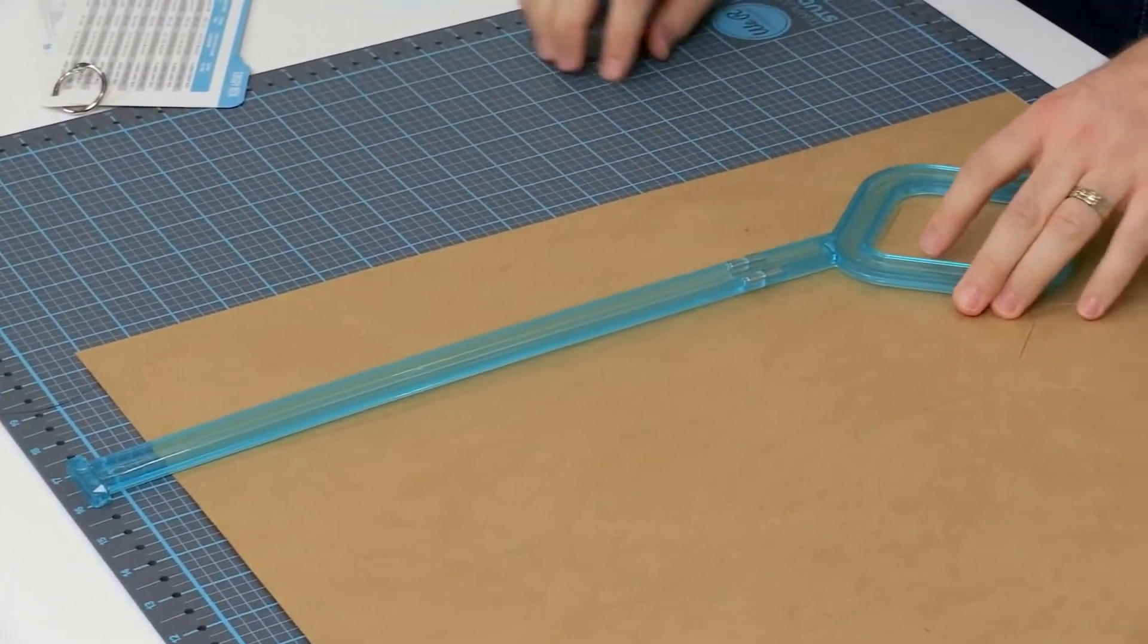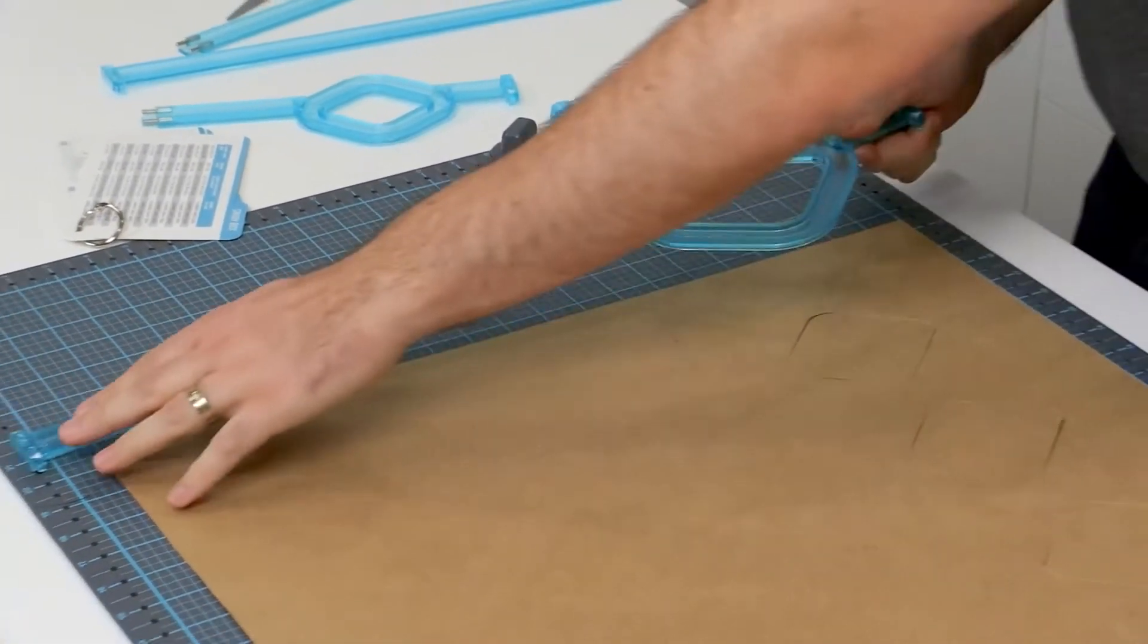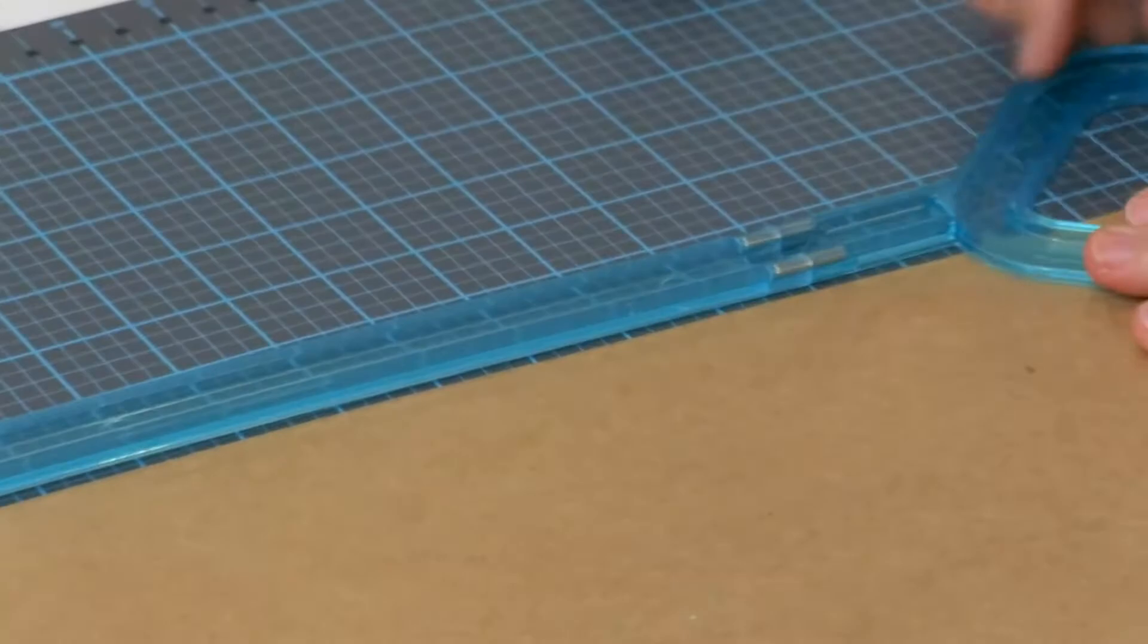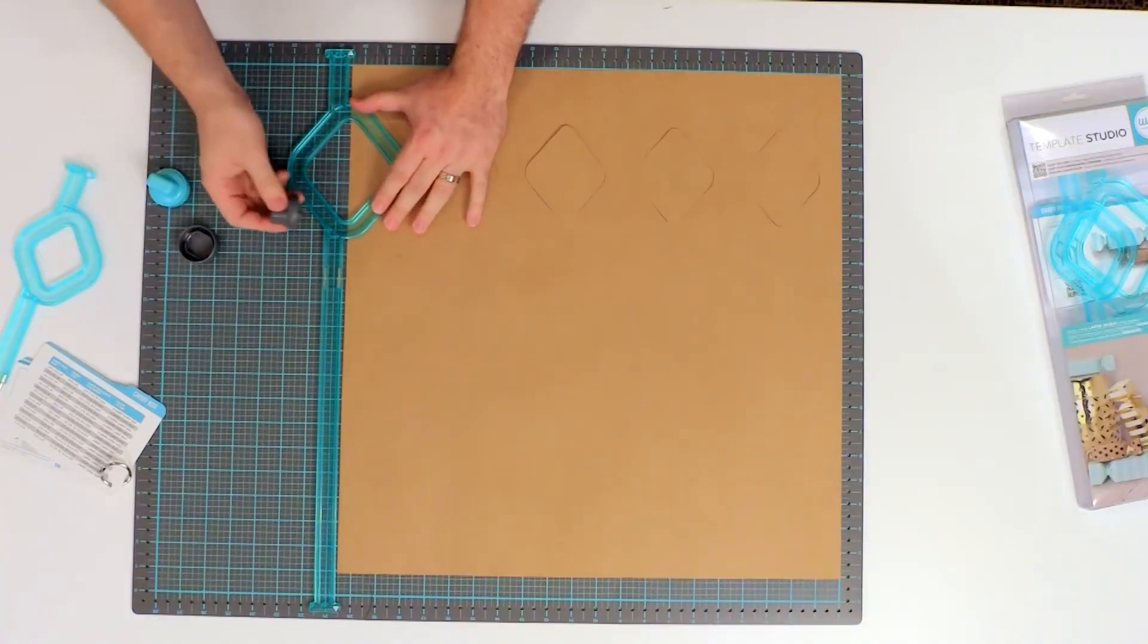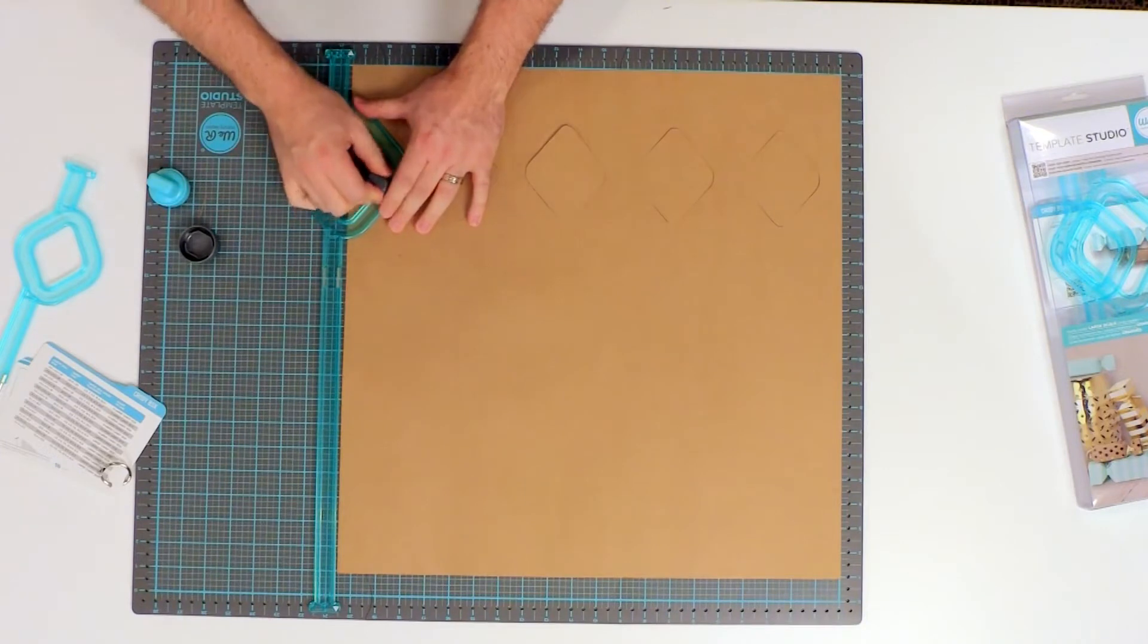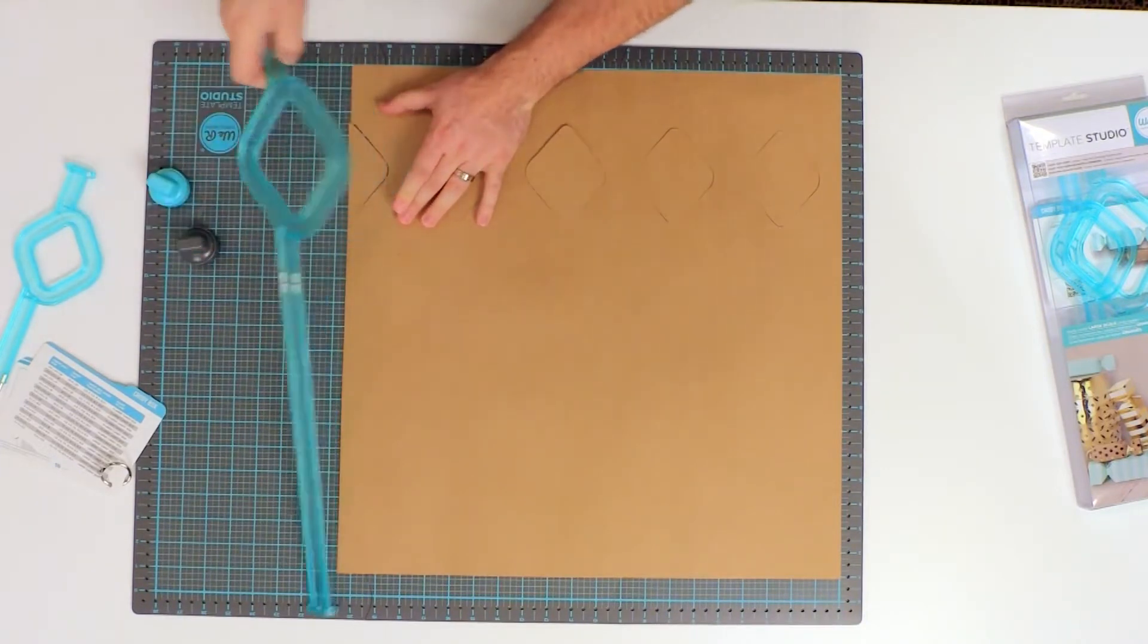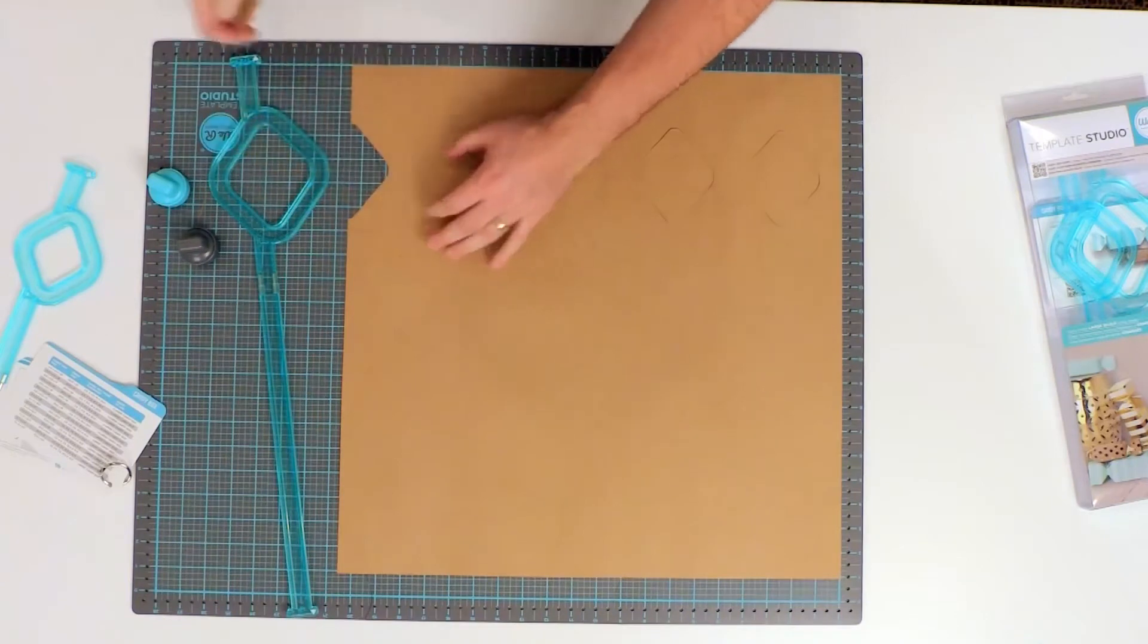And now I'm ready to do the very last one. And when you line up with the last one, which is 20 and a half, you'll notice that it lines up perfectly right along here. And so you're only going to have to cut right here along half of the diamond. Let me snap those out.